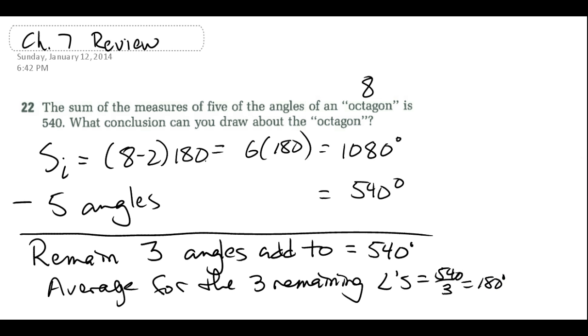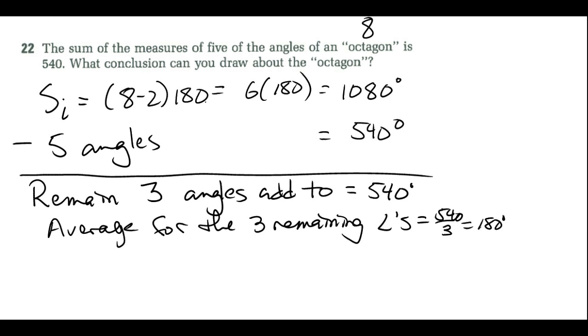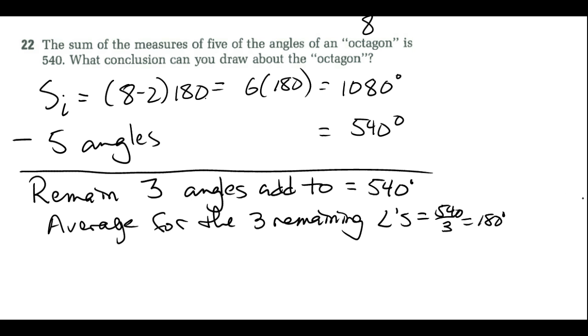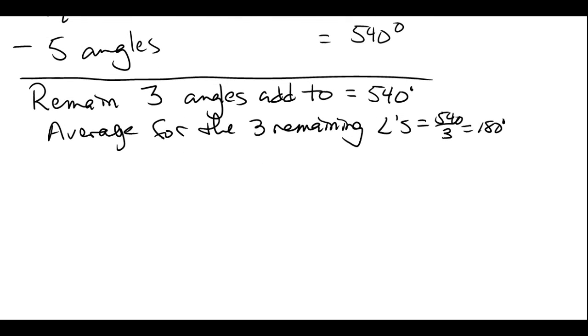Okay, so we know in a polygon you can't have any angles that are 180. So if I have an octagon and I know 5 of the angles add up to 540, what that means is one of the angles inside has to be more than 180. So this is kind of a weird concept for us.